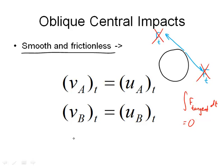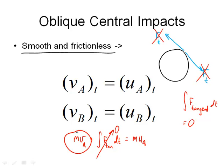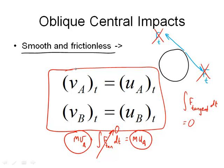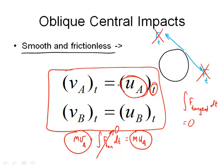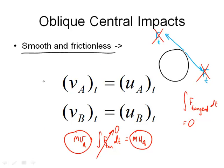Since there's no tangential force, mass times velocity of A plus the integral of any tangential force on A dt equals mass times velocity of A afterward — and that integral is zero. Therefore, the tangential velocity of A before equals the tangential velocity of A after. The same is true for B. So the tangential component of velocity of each particle individually does not change at all. That gives us two of our four equations.